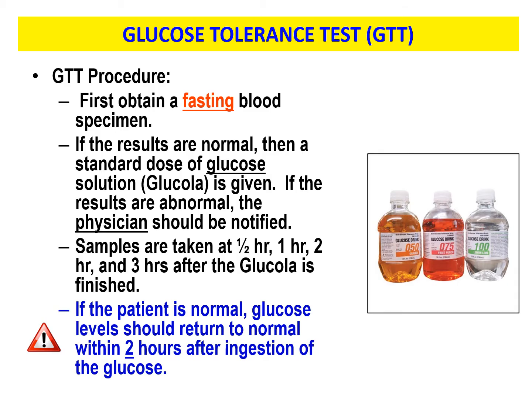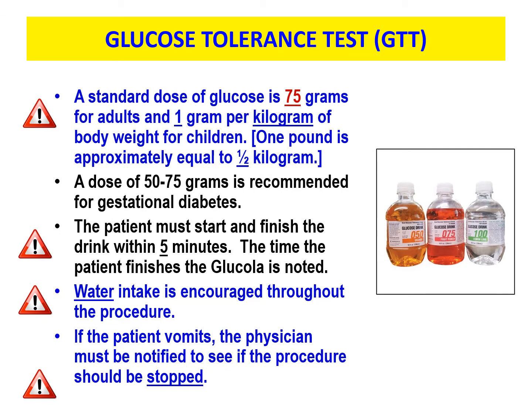If you don't have diabetes mellitus and your sugar metabolism is normal, two hours after drinking the glucola your glucose level should be back to normal. A standard dose of glucose is 75 grams for an adult and one gram per kilogram of body weight for children. One pound is approximately equal to half a kilogram. A dose of 50 to 75 grams is recommended for gestational diabetes. The patient must start and finish the drink within five minutes. Water intake is encouraged throughout the procedure.